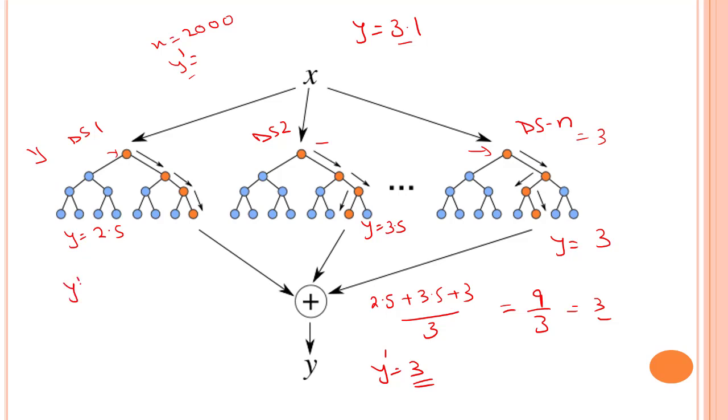Y1 dash would be 2.5. For the second decision tree, we would have gotten y2 dash as 3.5. For the last decision tree, we would have gotten something around 3. We can see that we have a lot of variance. In this case at the end, what we are doing is averaging them out, which gives me an actual good value that is 3. After averaging them out, we get the value as 3, which is the nearest to 3.1, which is better than any of these decision tree values.